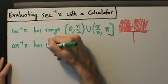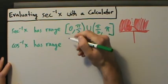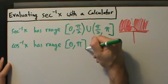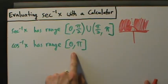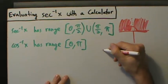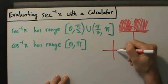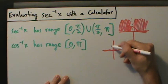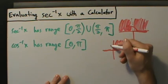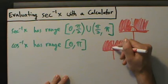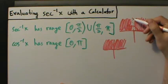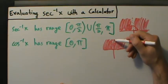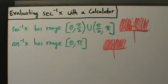Now let's do the same thing with inverse cosine. Inverse cosine has range 0 to pi. That range looks pretty much the same as inverse secant's range, except instead of a dotted line at pi over 2, we have a solid line — meaning pi over 2 is included. So the shaded region goes from 0 to pi continuously. The fact that inverse cosine includes pi over 2 while inverse secant does not will not affect our purposes at all.